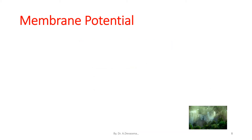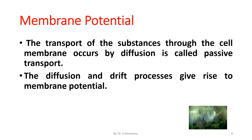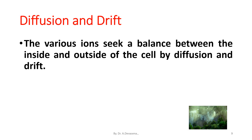Membrane potential: the transport of substances through the cell membrane that occurs by diffusion is called passive transport. The diffusion and drift process give rise to membrane potential. The various ions seek a balance between the inside and outside of the cell with the help of diffusion and drift processes.